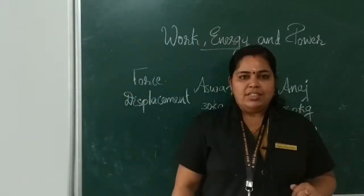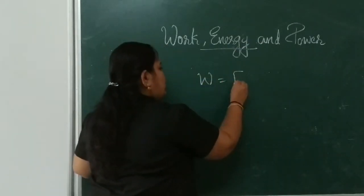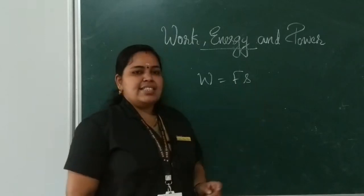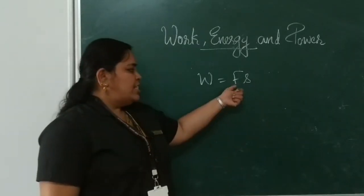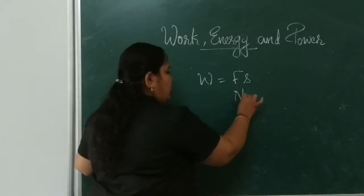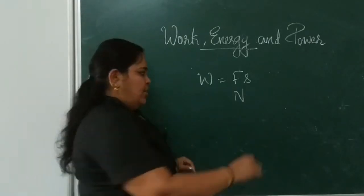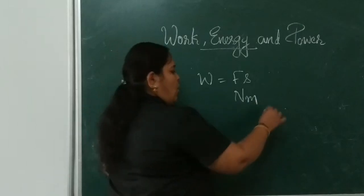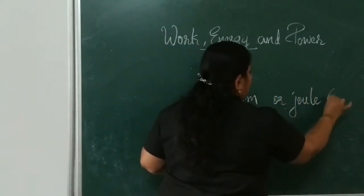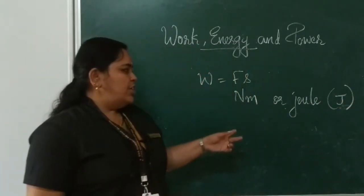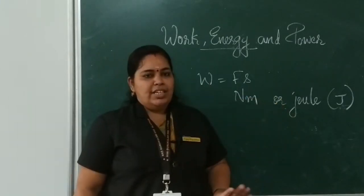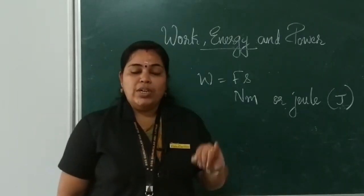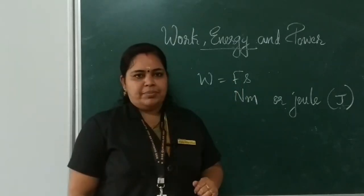Now we can write the formula for work. Work done W is equal to F into S, where F is the force and S is the displacement. The unit of force is Newton and the unit of displacement is meter, so the unit of work is Newton meter, or in other words, Joule — represented by the letter J. The unit of work done is Newton meter or Joule.